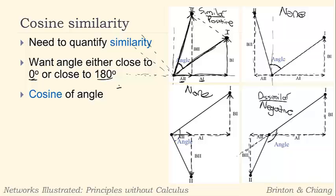The cosine is going to be close to plus one if the angle is close to zero degrees.